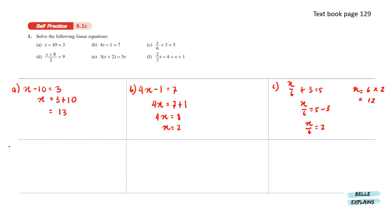Next, (x plus 8) over 2 equals 9. Moving the 2 to the other side gives us 9 times 2, which is 18. That leaves us with x equals 18 minus 8, which is 10.